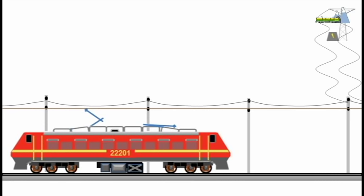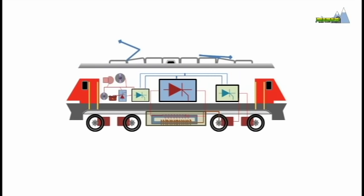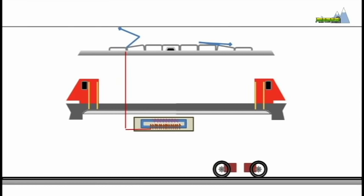An electric locomotive is essentially a box full of transformers and semiconductors. A pantograph collects electricity from overhead wires and transfers it to a transformer, which sets the electrical power to the desired voltage. A connection with the axle brushes completes the circuit.